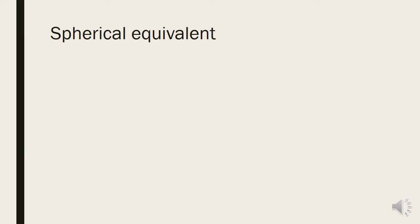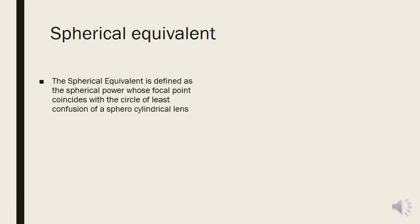Let's start with spherical equivalent. When we say spherical equivalent, it means there is a spherical lens which is equivalent — that is, equal — to something. It can be defined as the spherical power whose focal point coincides with the circle of least confusion of a sphero-cylindrical lens.